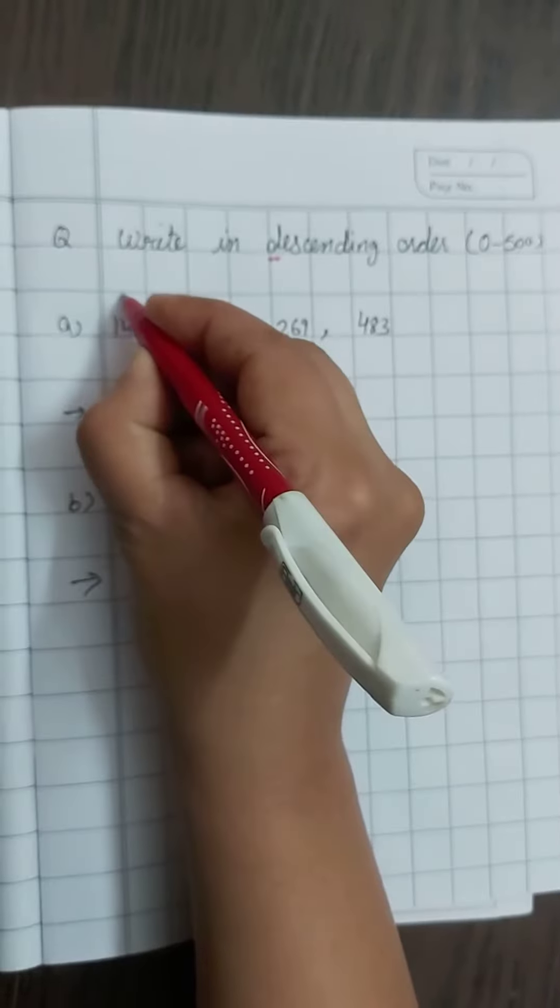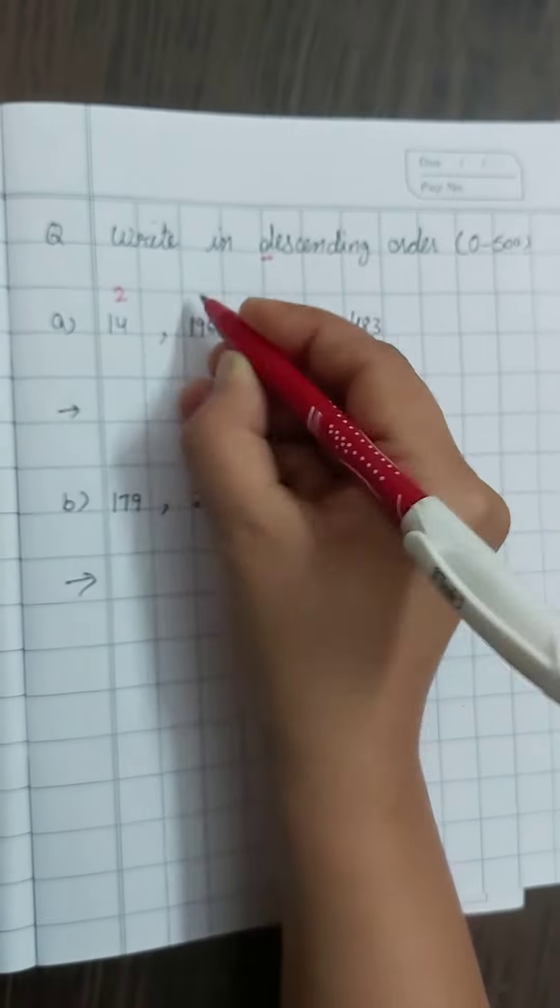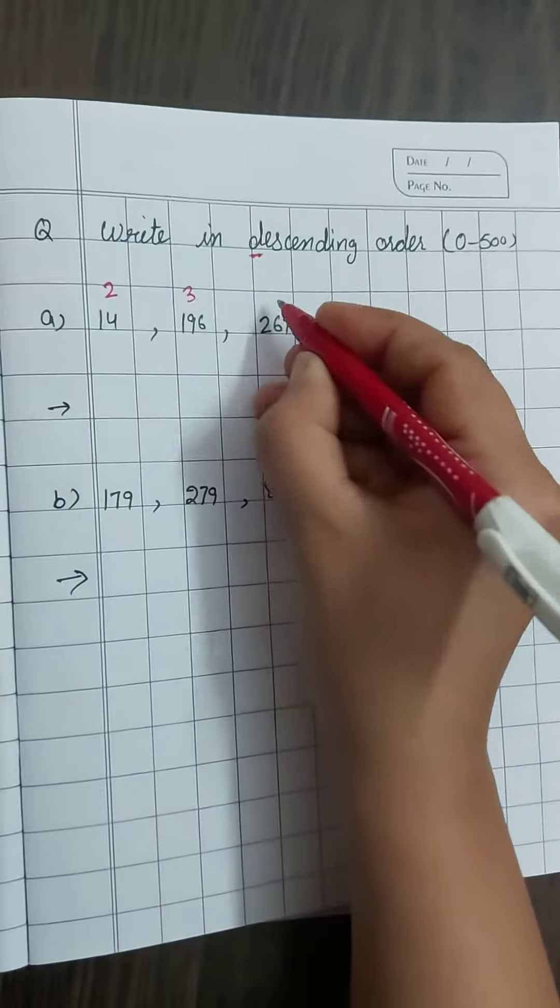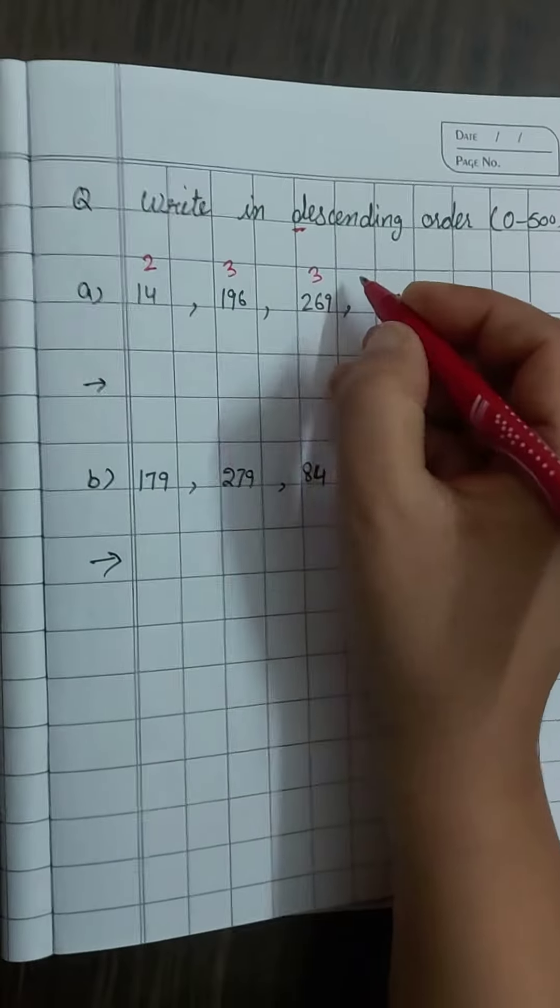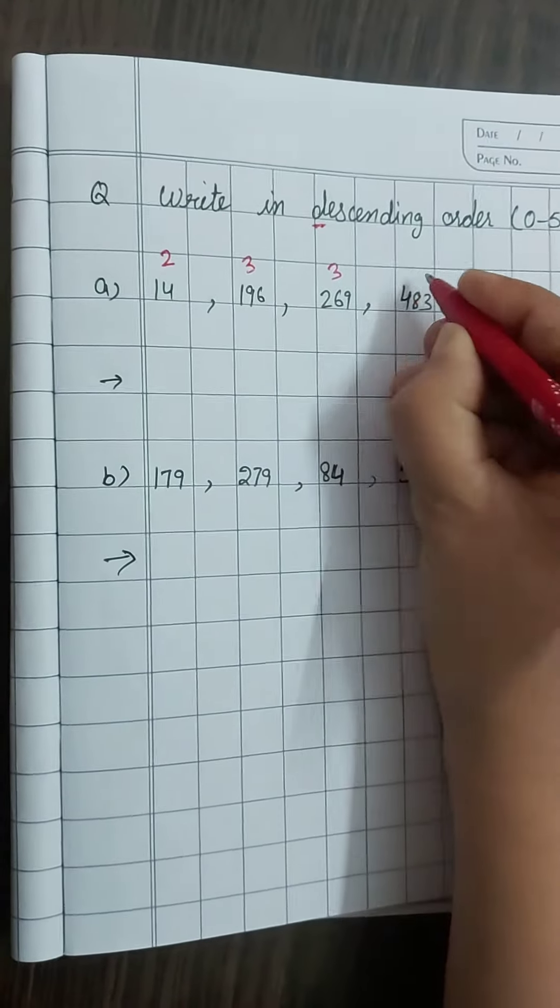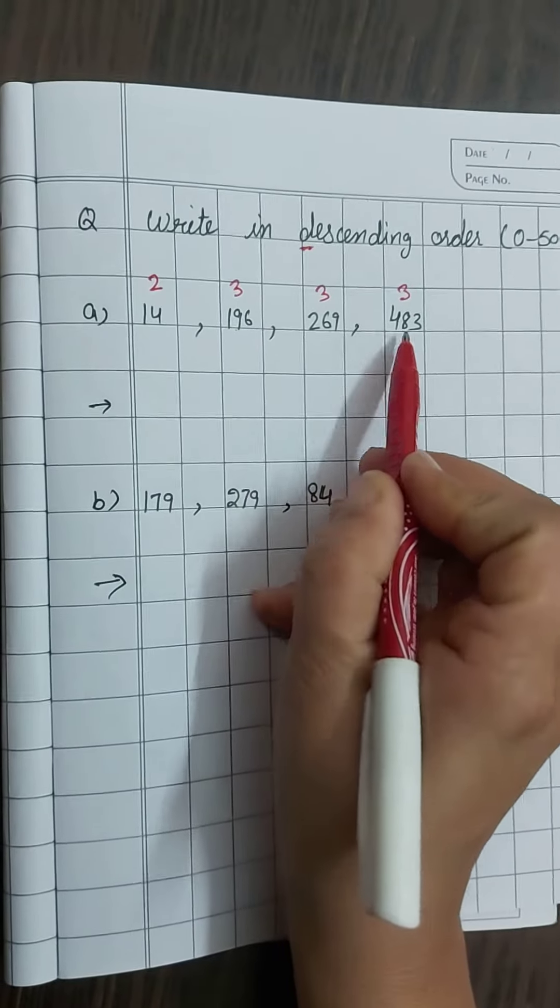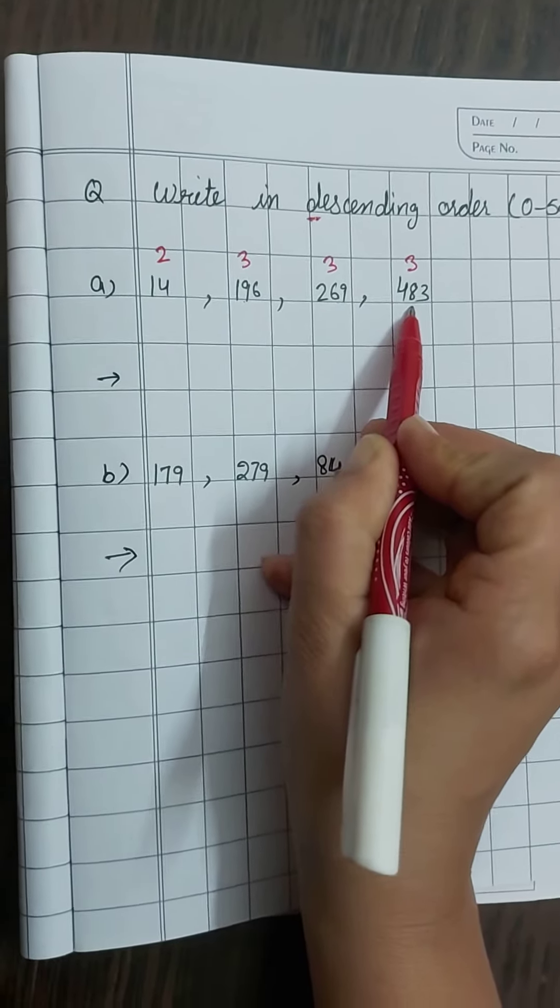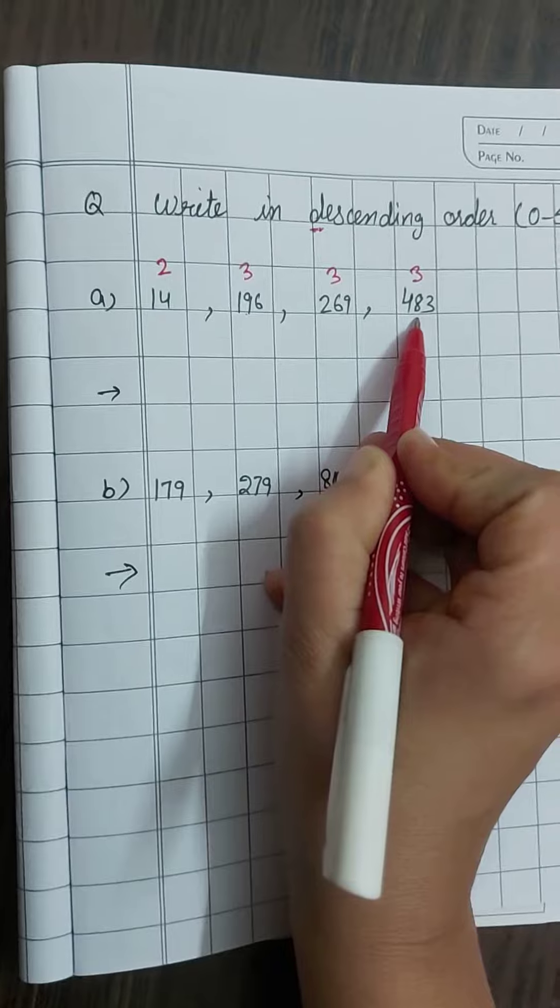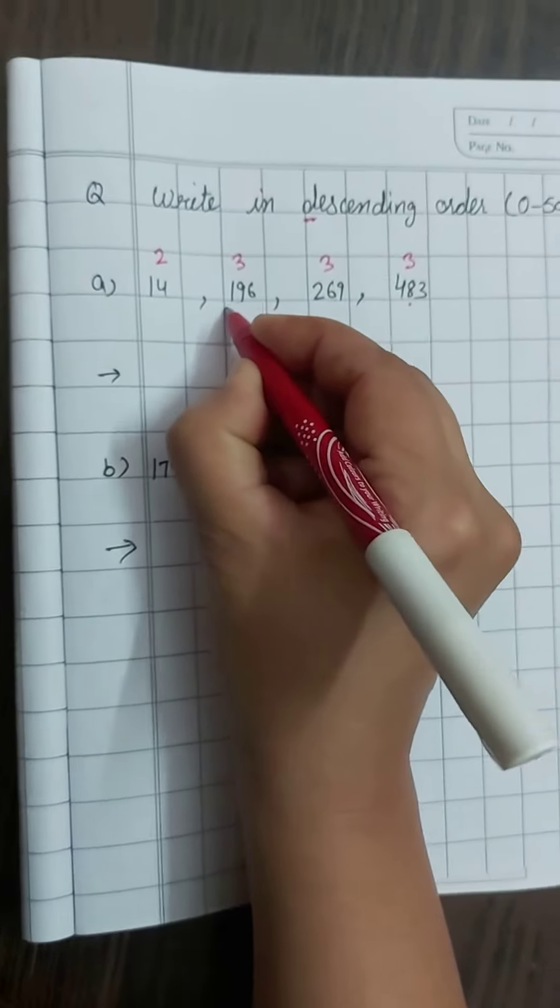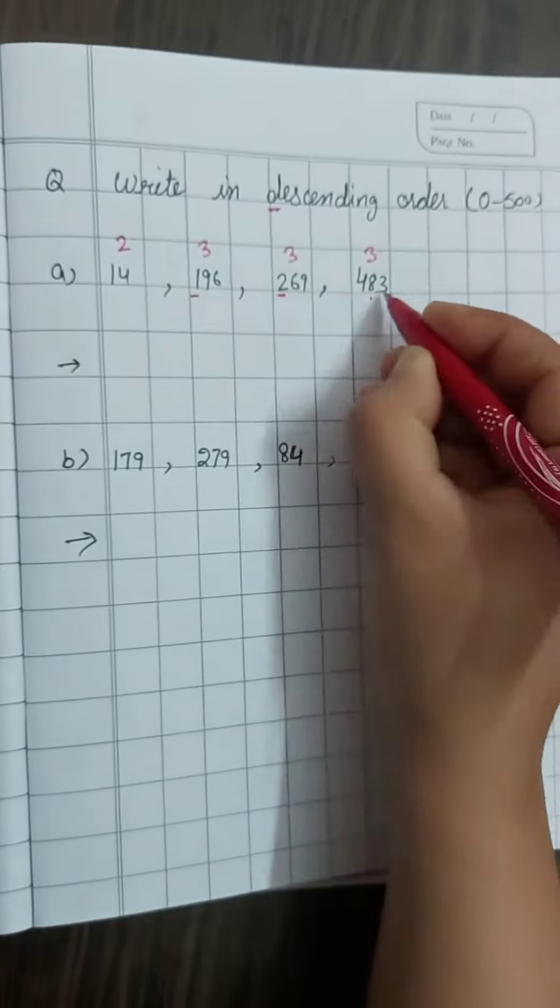First of all we will count the number of digits. Three digits. Very good. Three. Beta ye teenon three digit number hai. Ab humne find out karna hai ki sabse biggest number kaun sa hai. So, we will check the hundred place.